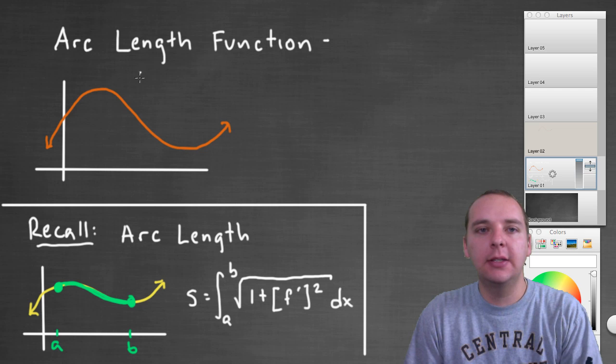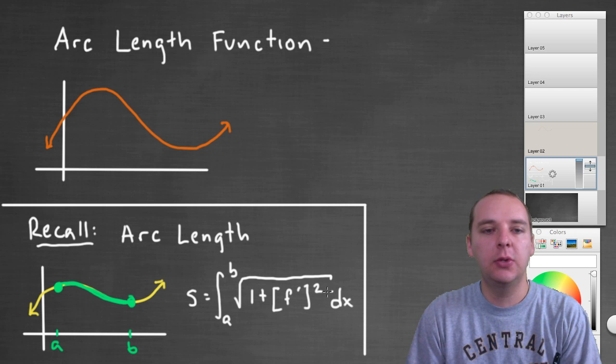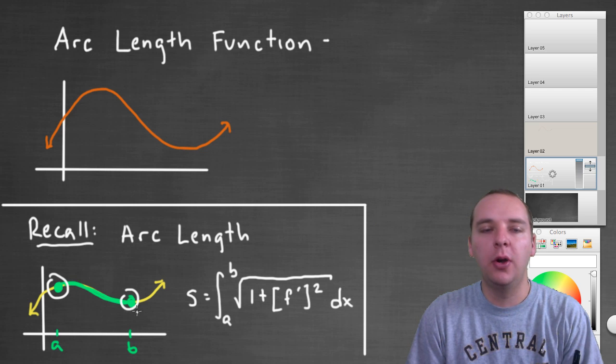And so to best explain this idea of an arc length function, let me actually take a step back for a moment and recall what we've done already. Alright so we know how to find the length of a curve from a to b, there was a formula for it, it was the integral from a to b of the square root of 1 plus f prime squared. You compute this definite integral and it gives you the length from a to b, it gives you a numerical value.